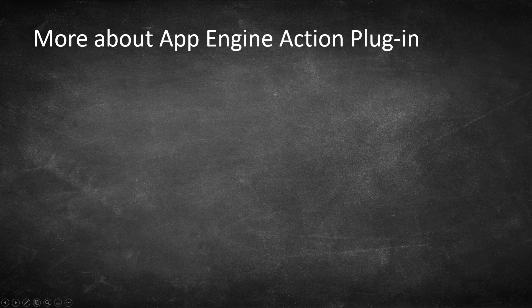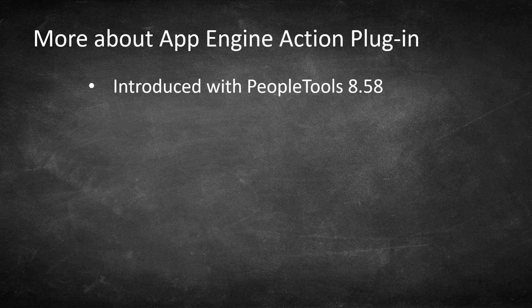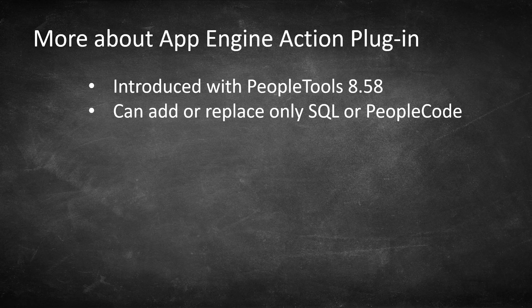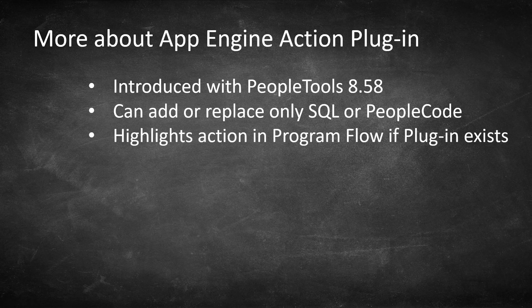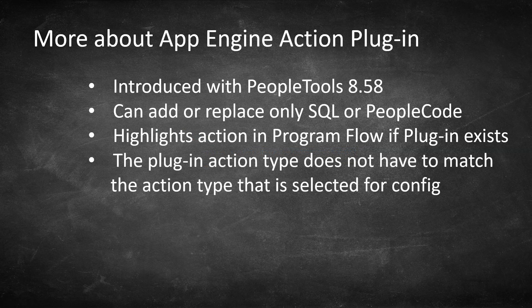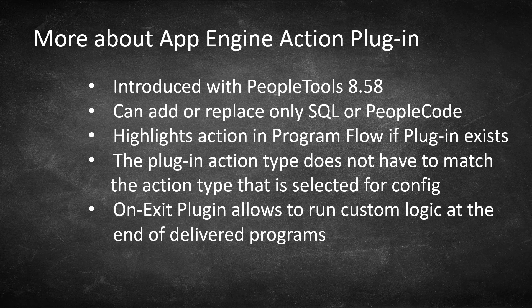Some things you should be aware of regarding App Engine Action Plugins. This tool was introduced in PeopleTools 8.58 and was enhanced in 8.59. We can only use the plugin to add or replace PeopleCode or SQL actions only. Other action types such as Do When, Do While, Log Message, and Call Section are not yet supported. PeopleSoft highlights with an icon when a plugin is configured for a delivered program in the App Engine program flow section. The plugin action type does not have to match the action type selected for configuration — meaning we can replace a SQL action with PeopleCode and vice versa. We can also replace one SQL action with multiple SQL actions, likewise with PeopleCode. In PeopleTools 8.59, Oracle introduced the onExit plugin, which allows us to inject custom logic at the end of the delivered App Engine program. We can also reuse our plugins across multiple delivered App Engine programs.